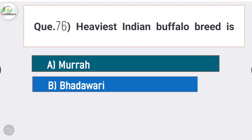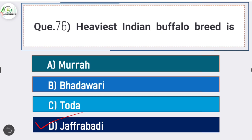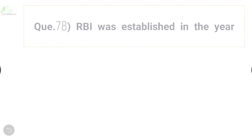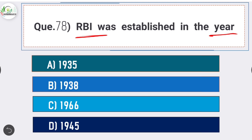Question number seventy-six: heaviest Indian buffalo breed is Surti/Jaffarabadi. Question number seventy-seven: honeycomb structure is a diagnostic feature of - answer is option A - lateritic soil. Honeycomb structure is a diagnostic feature of lateritic soil. Question number seventy-eight: RBI was established in the year - answer is option A - 1935. RBI was established in the year 1935.